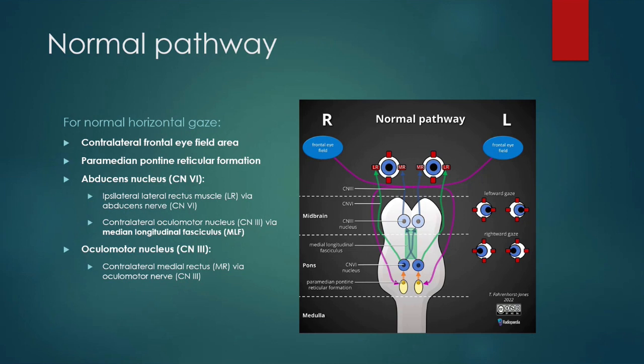When the lateral rectus contracts, it results in abduction. The medial rectus muscle is supplied by the third nerve or oculomotor nerve, which originates from the third nerve nucleus sitting in the midbrain, and when this contracts, it results in adduction. The contralateral third nerve nucleus and the ipsilateral sixth nerve nucleus communicate with each other via the medial longitudinal fasciculus, a heavily myelinated tract located in the pons.